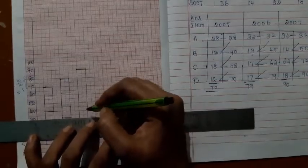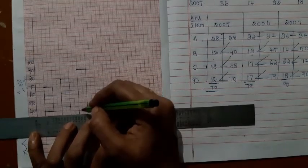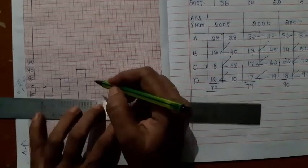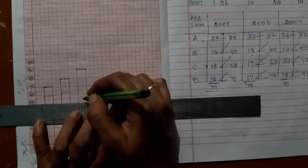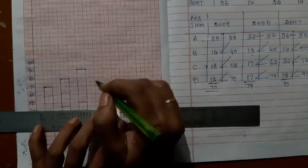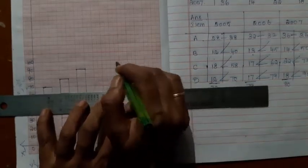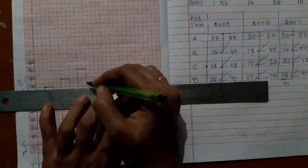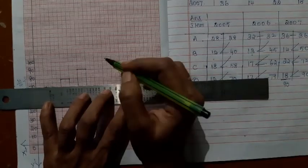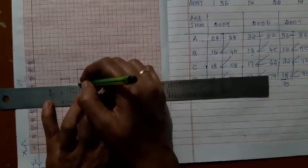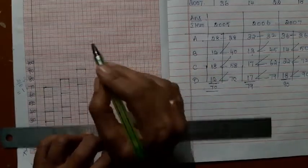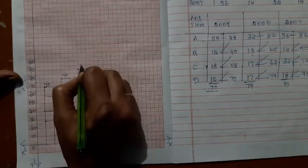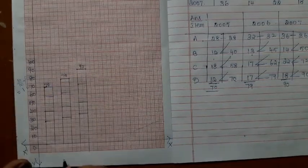Then 36. 35, 36. Then it is 50. 50 is here. Then it is 72. 71, 72. Then it is 90. So it is 70 here, 79 here, it is 90 here.